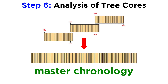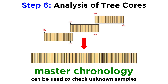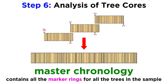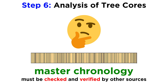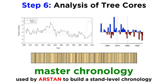The goal of cross-dating is to create a reliable master chronology of tree growth in an area that can be used to answer other questions. Once a master chronology is created, it can be used to check any unknown samples. The master chronology is a continuous time series containing all marker rings that agree between trees for the length of the chronology — it is the best tool to date any remaining samples. This master chronology is then checked and verified by a different dendrochronologist or other established master chronologies in the region, before being used by another program like R-STAN to build a stand-level chronology.